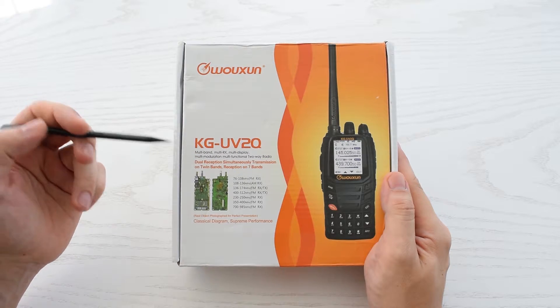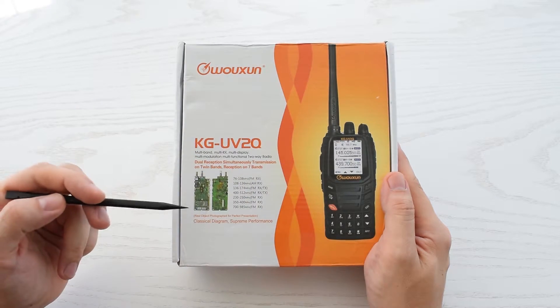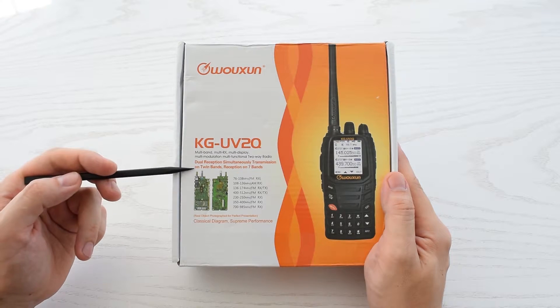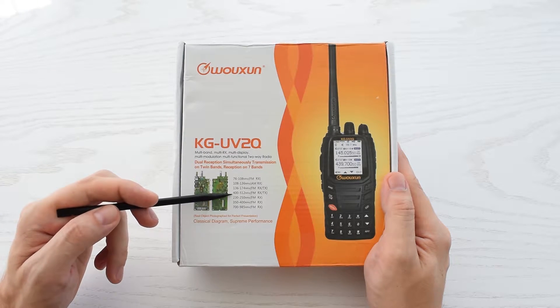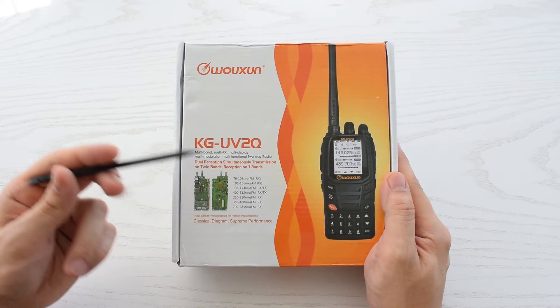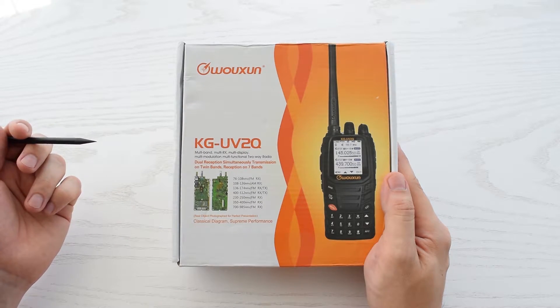It's a 10W radio which features a large color screen, superheterodyne receiver, cross-band repeater, dual-band transmit and 7-band receive. This device costs about $160, the link down below.